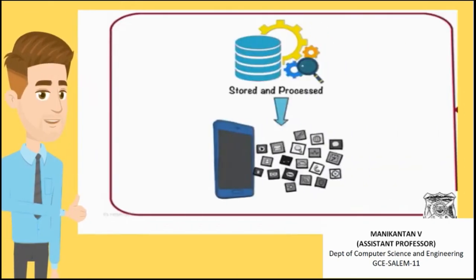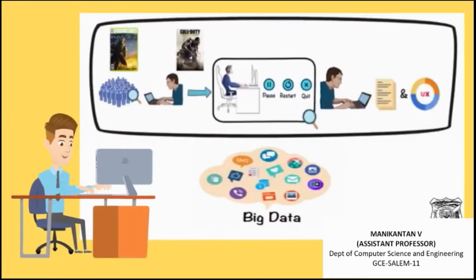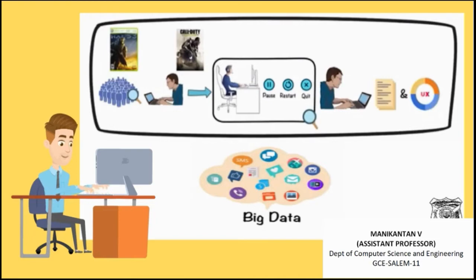Now that we have stored and processed our big data, we can analyze this data for numerous applications. In games like Halo 3 and Call of Duty, designers analyze user data to understand at which stage most of the users pause, restart, or quit. This insight can help them rework on the storyline of the game and improve the user experience, which in turn reduces the customer churn rate.